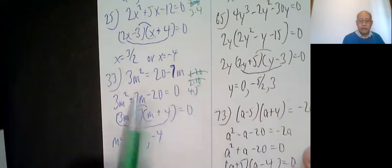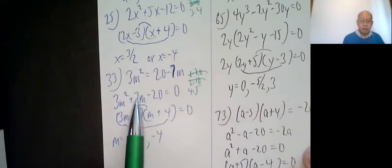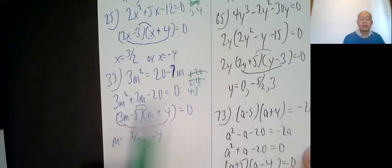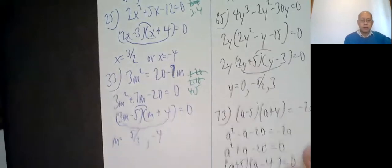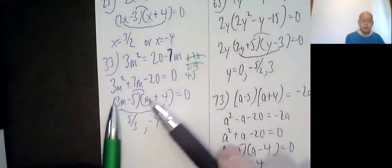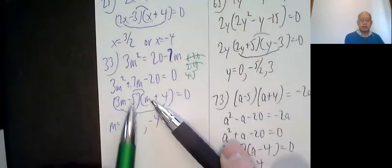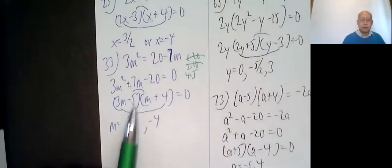Combinations of 20 are 1 and 20, 2 and 10, and 4 and 5. It cannot be 2 and 10 because we're aiming for 7, an odd number, so there must be at least one odd factor. 1 and 20 most likely not, 7 is not that big, so it's probably 4 and 5. This is the proper combination: 3m minus 5, m plus 4. Quick FOIL check: 3m squared plus 12m minus 5m is 7m minus 20.